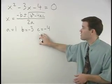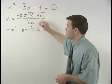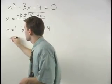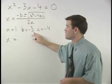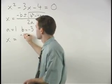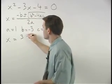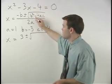Plugging these three values in for a, b, and c into the quadratic formula, we have x equals negative b, which is negative of negative 3 or positive 3, plus or minus the square root of b squared, which is negative 3 squared or positive 9,